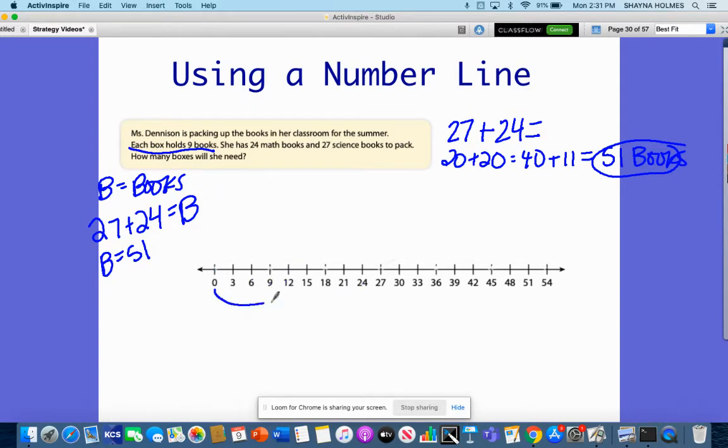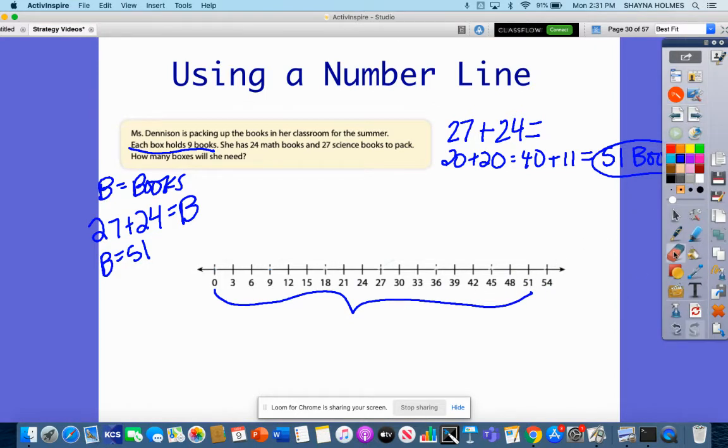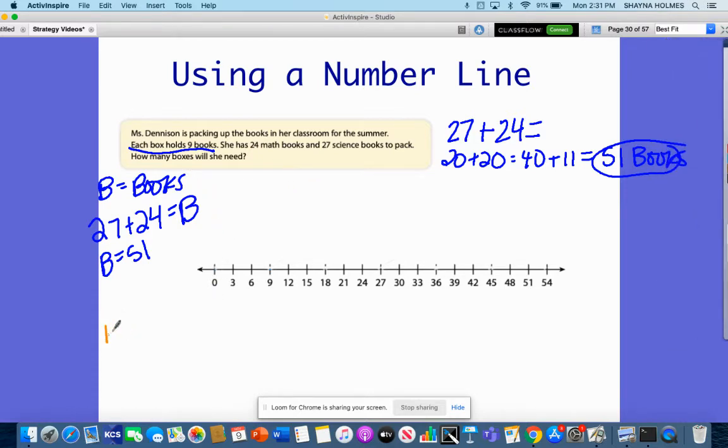This is going to actually represent all of our books here that we're going to be packing up, this little number line right here. It says that each box, one box, can have 9 books. So if these are all of the books, I'm going to skip count. This top will represent the boxes. If I go from 0 to 9, that is one box.